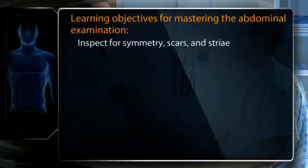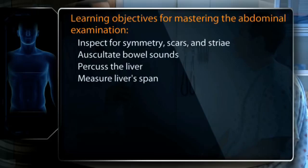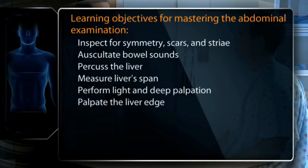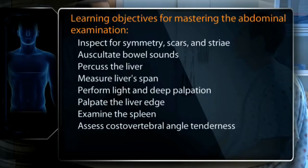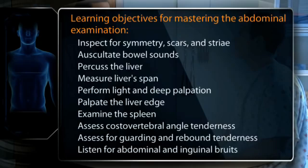A little bit about the abdominal pain that you've been experiencing. Your learning objectives for mastering the abdomen examination are to inspect for symmetry, scars, and striae, to auscultate bowel sounds, percuss the liver and measure its span. You will perform light and deep palpation of the abdomen and palpate the liver edge. You will examine the spleen and assess costovertebral angle tenderness, and be skilled at assessing for guarding and rebound tenderness, and be able to listen for and identify abdominal and inguinal bruits.